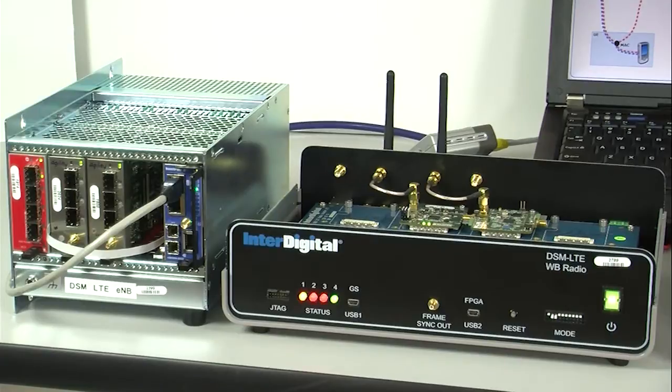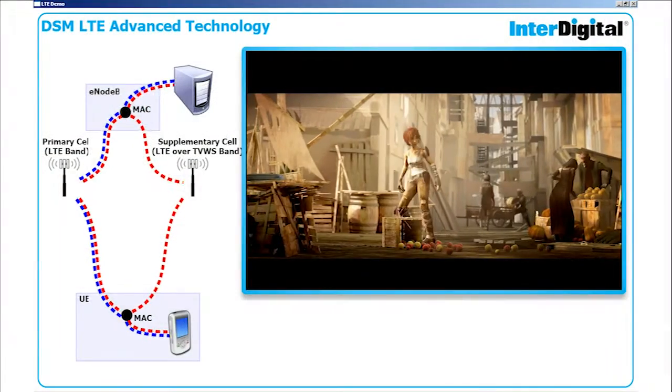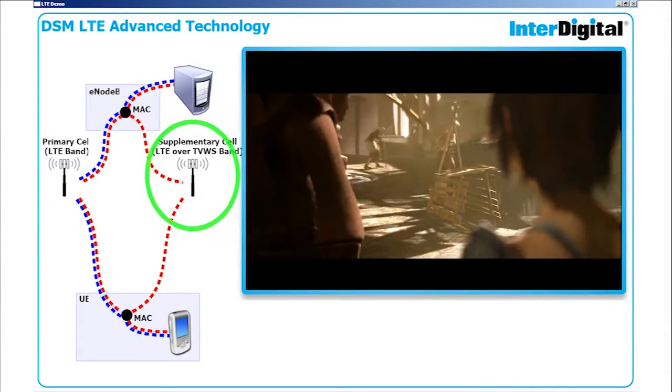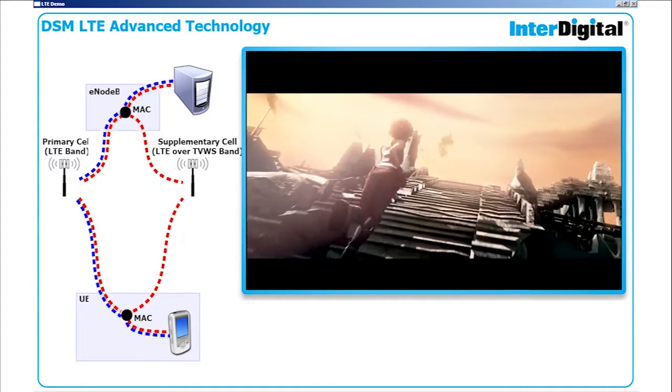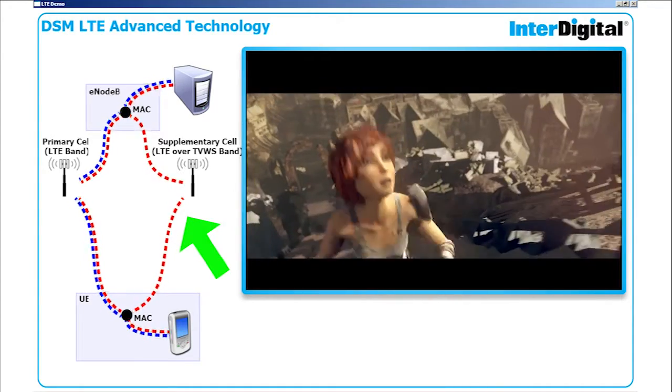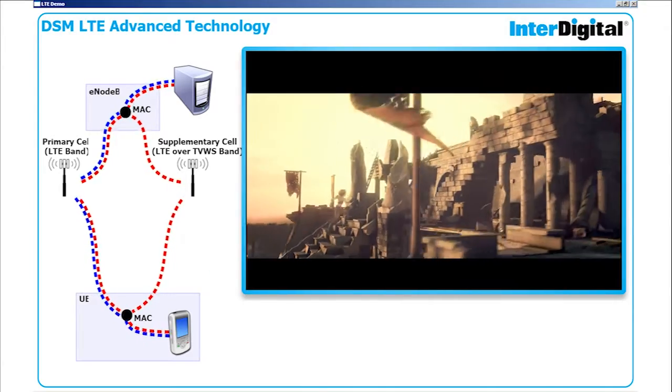Here our UE is receiving data over a white space and cellular link. The white space link is broken, causing a reduction in bandwidth. The resulting packet loss causes deterioration of the video. The white space link is then restored, increasing bandwidth and allowing the video to recover.